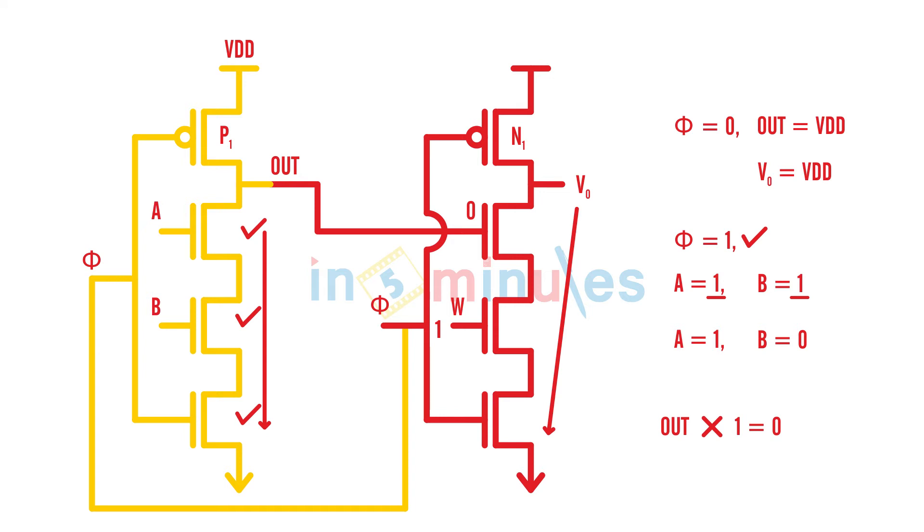So a dynamic circuit cannot be cascaded with a dynamic circuit directly because of the problem of monotonically rising input condition.